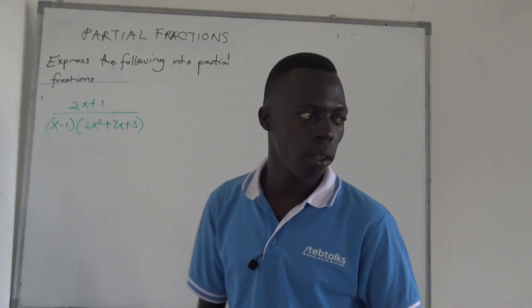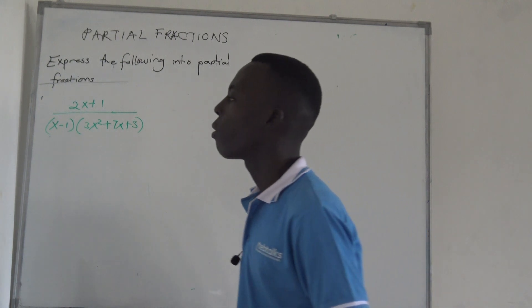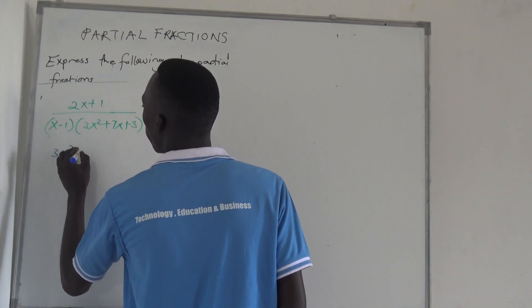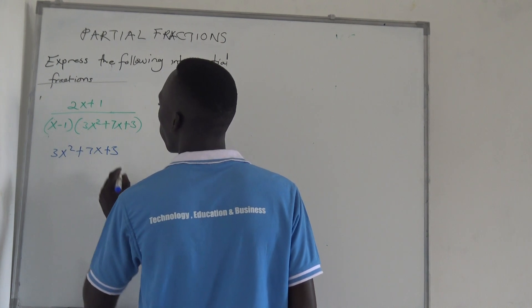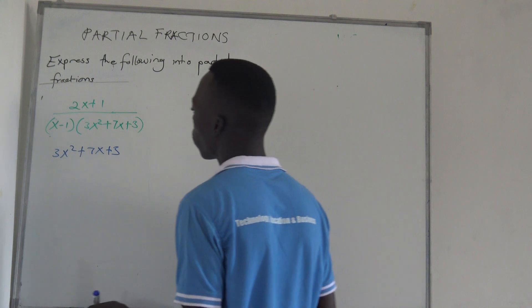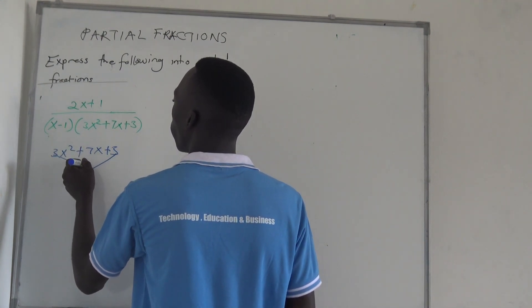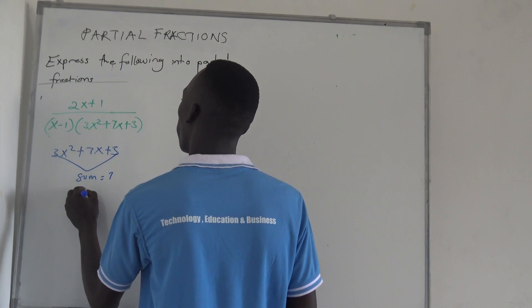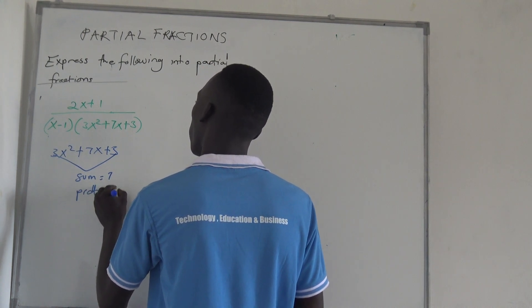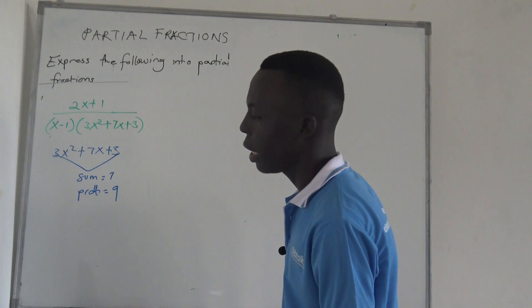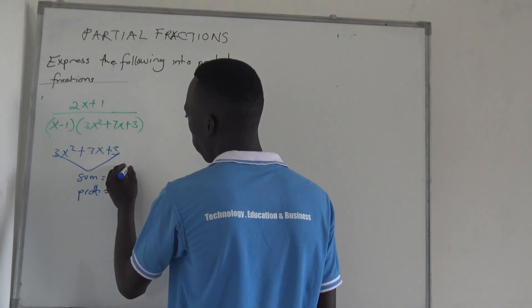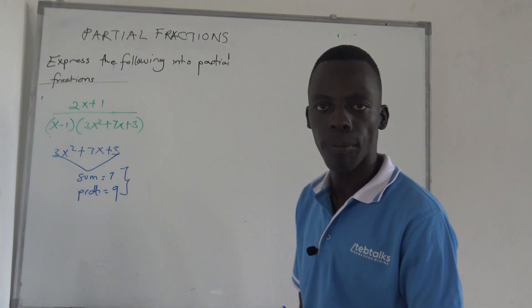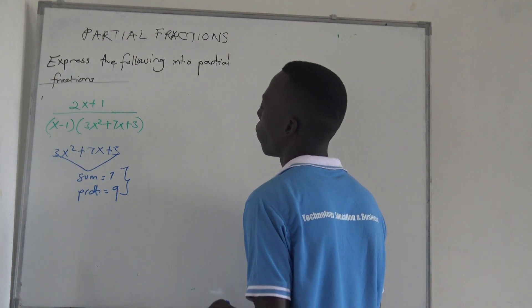We check whether it can be factorized to its simplest form. If you take 3x squared plus 7x plus 3, we first see whether it has factors. For this case, the sum is 7 and the product is 9, so we check whether we have two numbers which when multiplied give 9 and when added give 7.